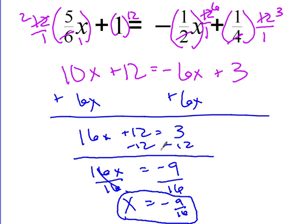Don't actually divide to change this into a decimal — just leave it as the fraction answer. When I divide by 16, this is a fraction, and negative 9 over 16 is my final answer.